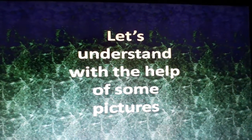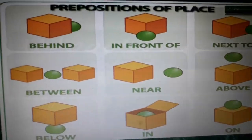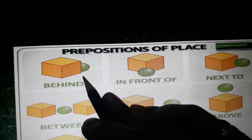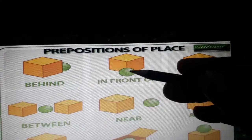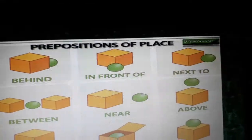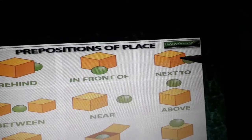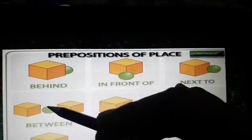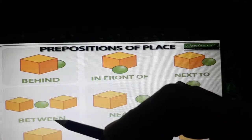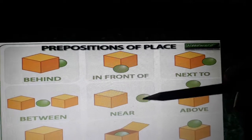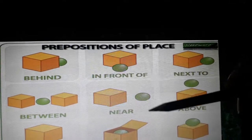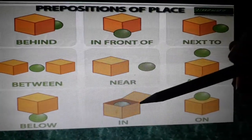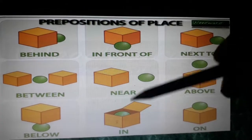Let's understand with the help of some pictures. Here is a box — something is just behind it, so that is 'behind.' Something is just ahead of it, so that is 'in front of.' The ball is kept quite close, so that is 'next to.' Two boxes are there and the ball is in between them, so that is 'between.' If you are in this situation, it means you are 'near' to something. This is 'above' and this is 'below.'